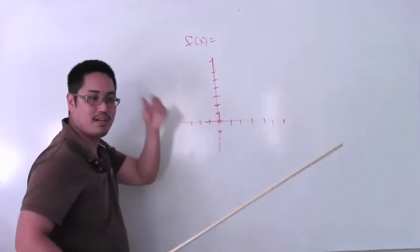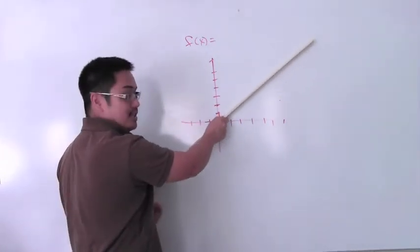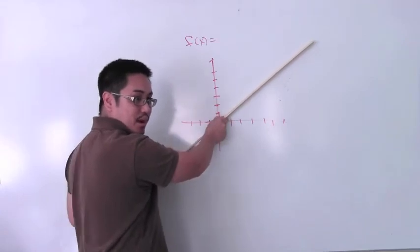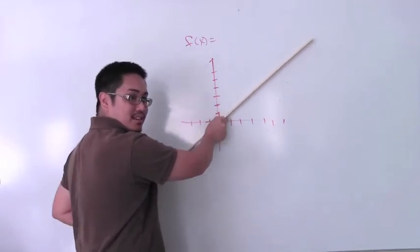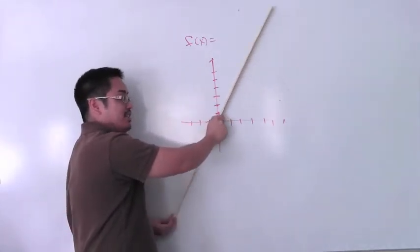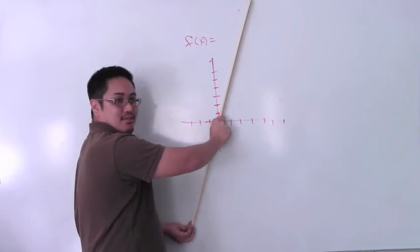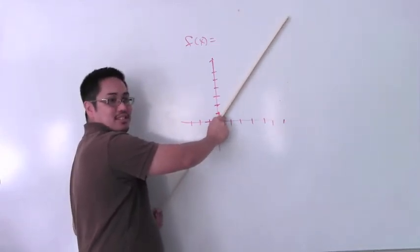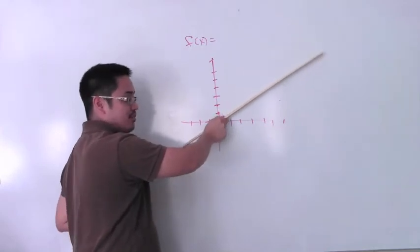I guess one way to think about it is like, imagine walking on this thing or riding a bike up this hill. Right? If the slope were 3, versus if the slope were 2, and the slope were 1, that would be that.